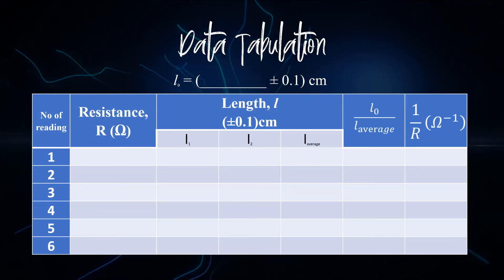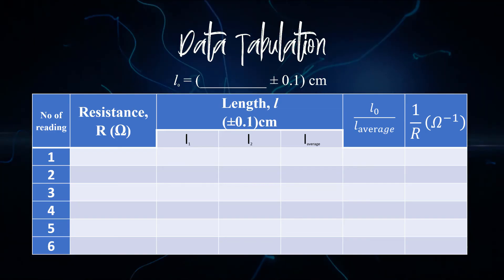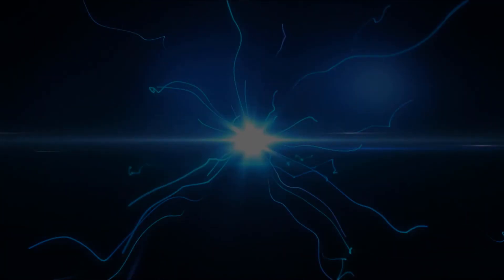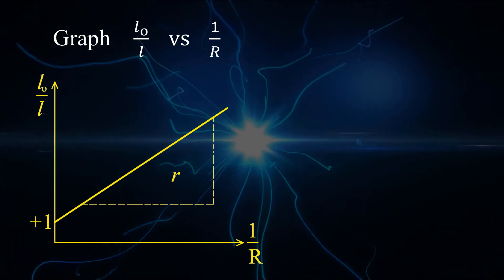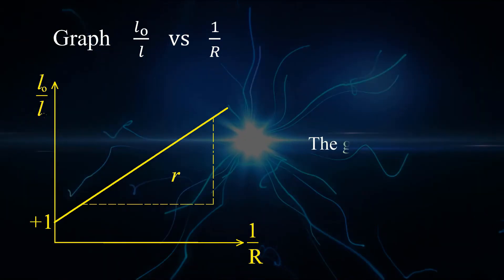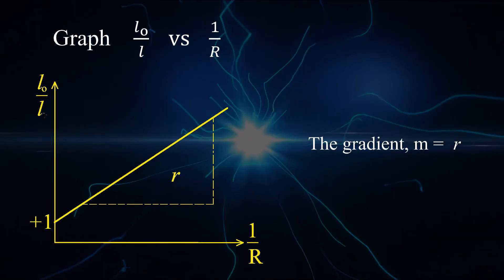Using this table, tabulate your data accordingly. Then plot the graph of L0 over L versus 1 over R. You can get your internal resistance from the gradient of the graph.